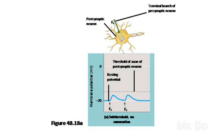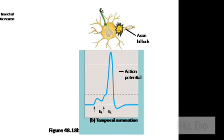If E1 is being sent at different time frames — further apart from each other — the strength is not going to be strong enough to generate an action potential. But if the excitatory signal is sent twice and faster than before, then it's going to be strong enough to create an action potential. This is called temporal summation — temporal meaning time. So if the neurotransmitter is sent quickly enough, we can generate an action potential at the axon.